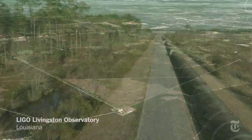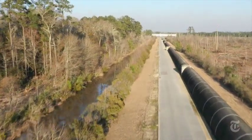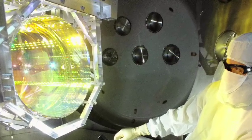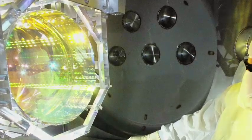Each detector has an L-shaped antenna with arms two and a half miles long. Inside the ends of each arm, mirrors of ultra-pure glass are isolated from the noise, heat and vibrations of the outside world.